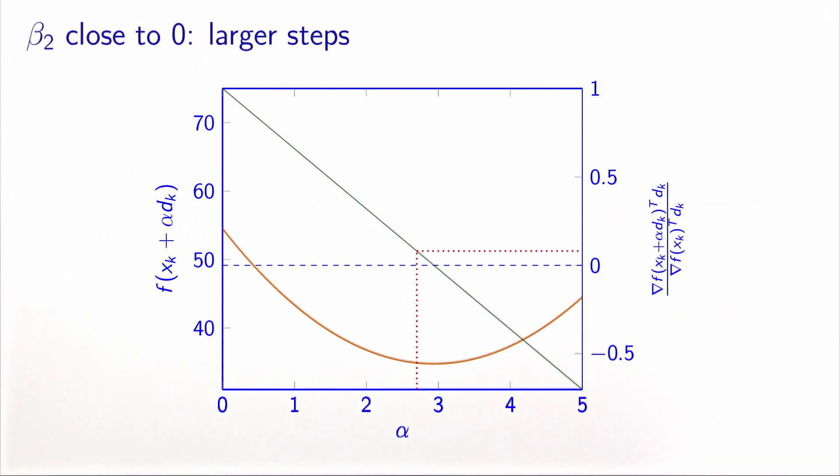Let's take two examples. So here, beta two is close to zero. So it means that we would like to be very close to the local optimum. And this requires to make larger steps. We are not allowed to make steps which are lower than 2.6 here, something like this, or 7.